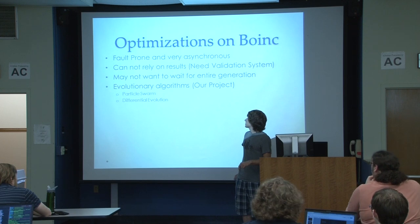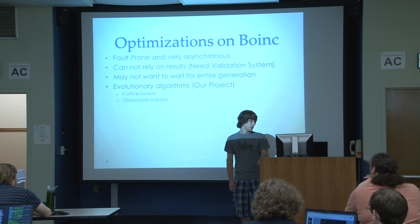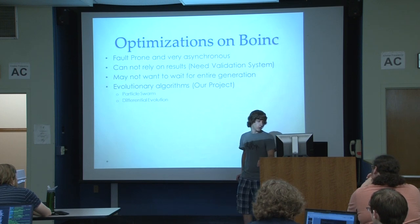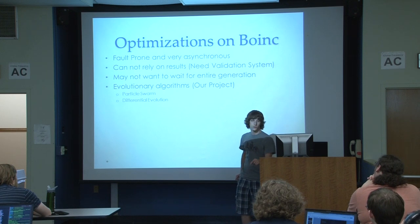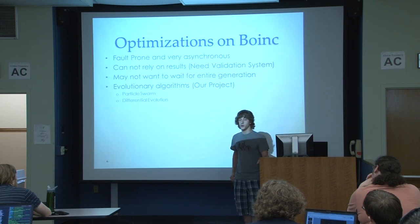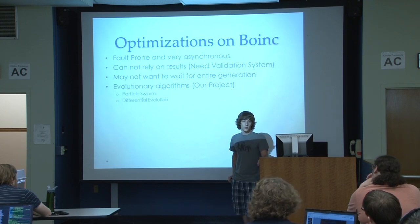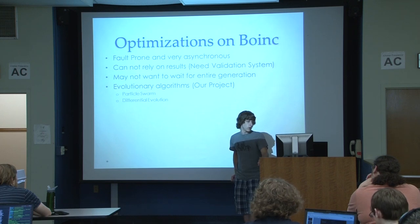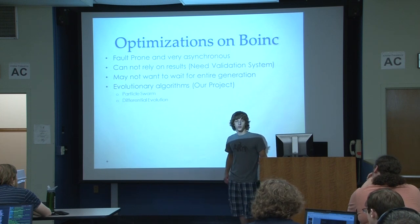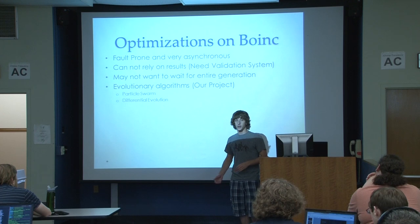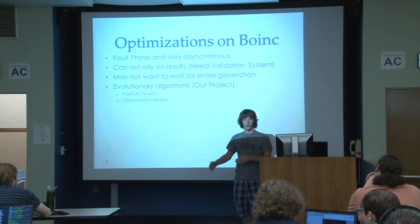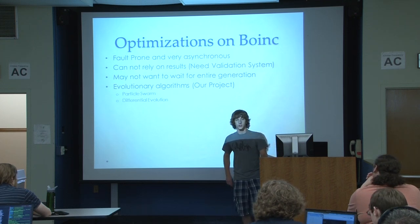With all of that stuff mostly fixed, I'm now looking at optimizations on our distributed computing network. One major problem is it's very fault-prone and very asynchronous — you can't necessarily wait for all results to be back before starting on your next population, because we're using evolutionary algorithms. All results we get need to be validated because they go to people's computers who can compile their own version, so we need to check between multiple users and ensure consistent results.